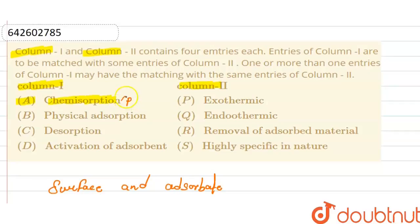Option P applies to chemisorption because it is exothermic. The second property is that chemisorption is highly specific in nature, because molecules are held on the solid surface through a chemical bond, making the process highly specific.